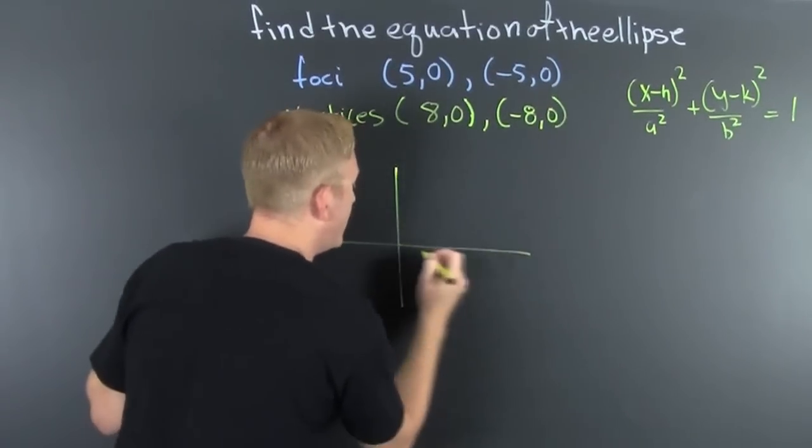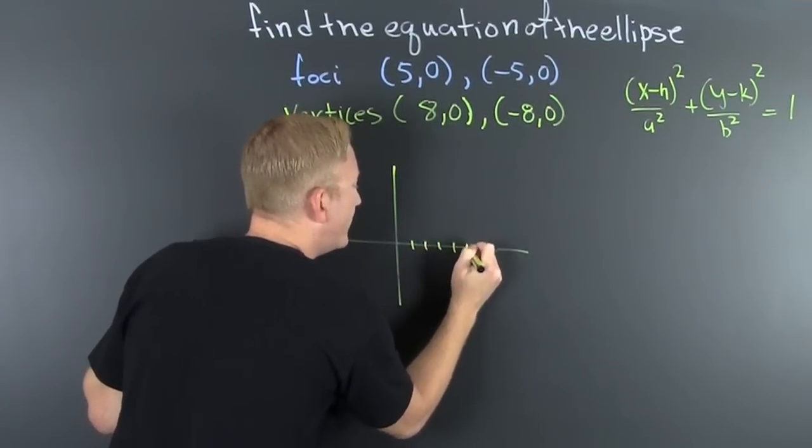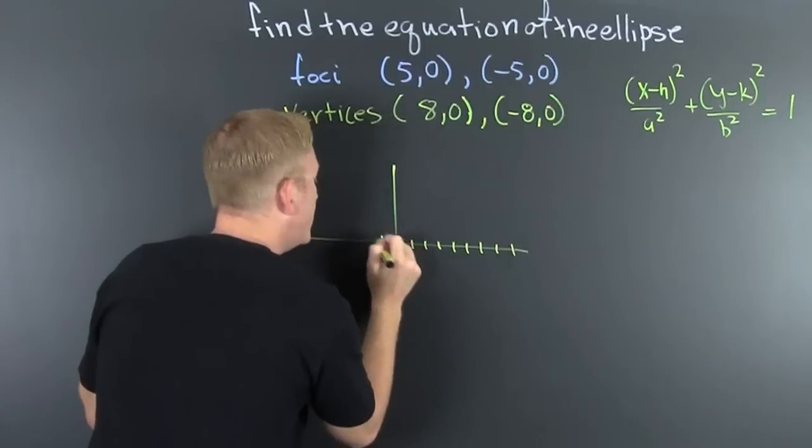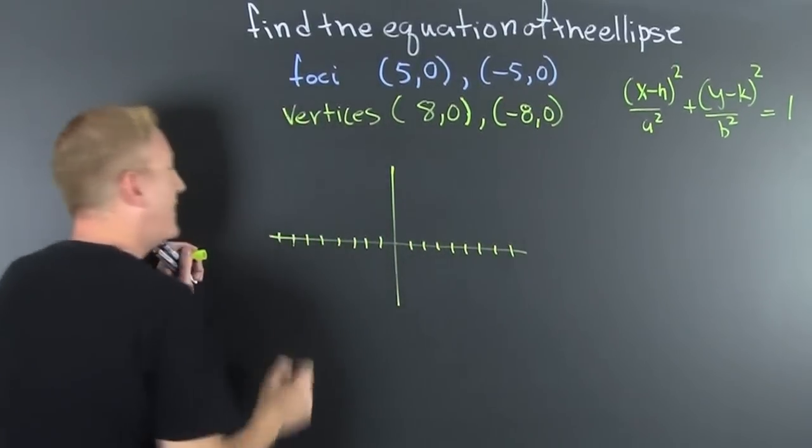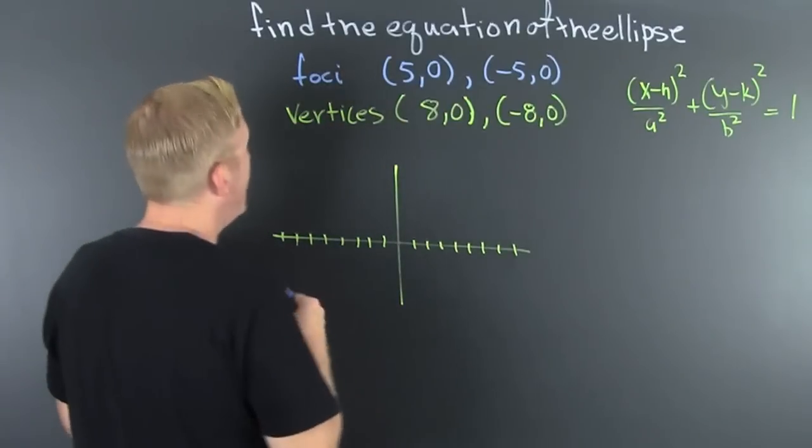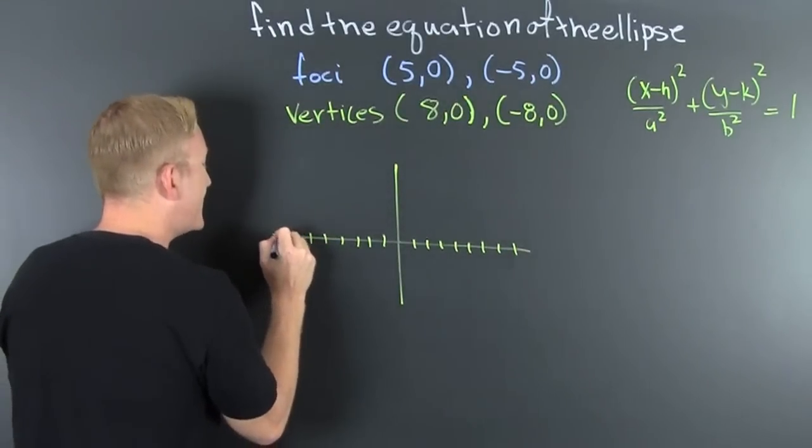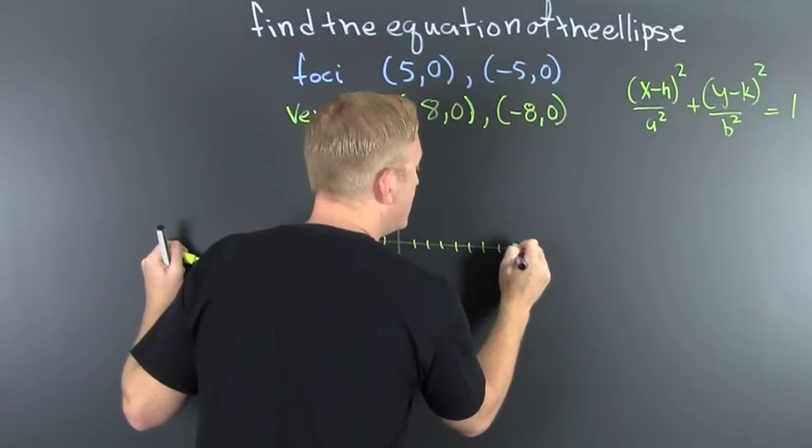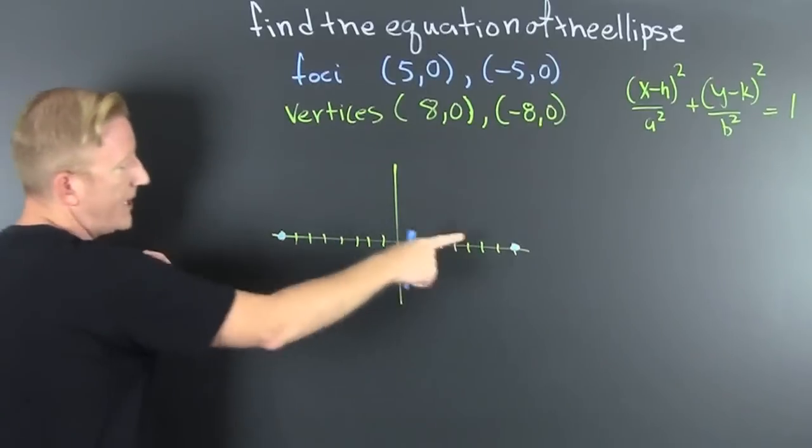Boom. Boom. 1, 2, 3, 4, 5, 6, 7, 8. 1, 2, 3, 4, 5, 6, 7, 8. I feel like I'm just dancing through this problem. Yeah. So then, bam. That's (8,0), (-8,0), and (8,0).